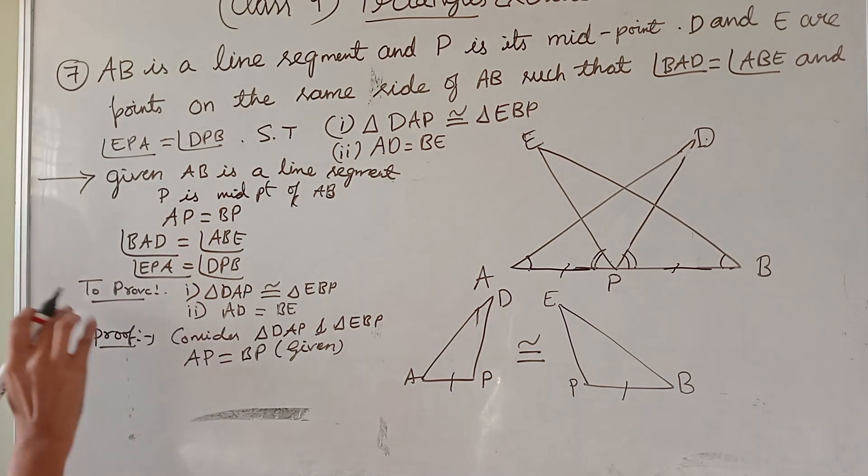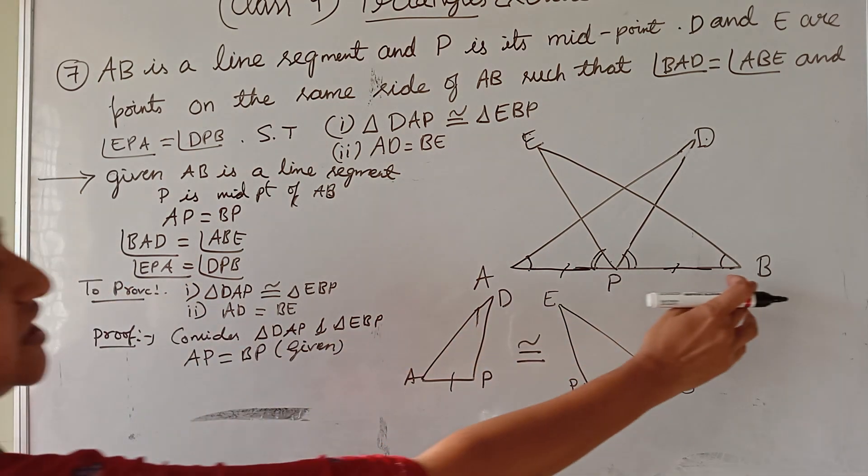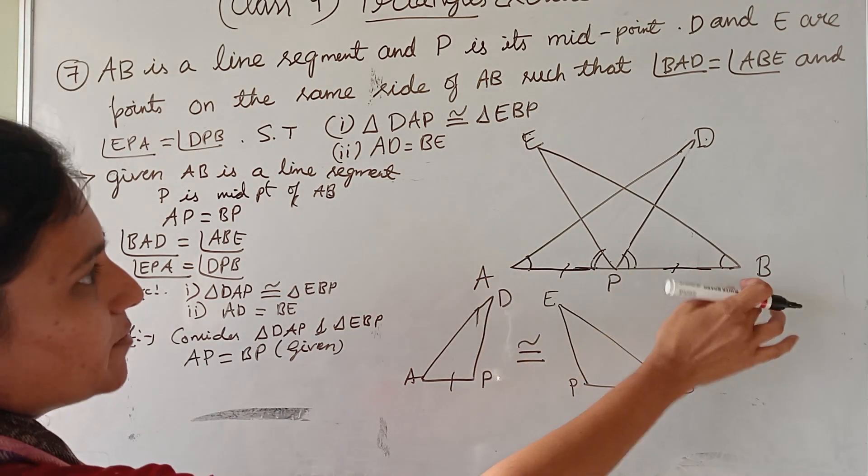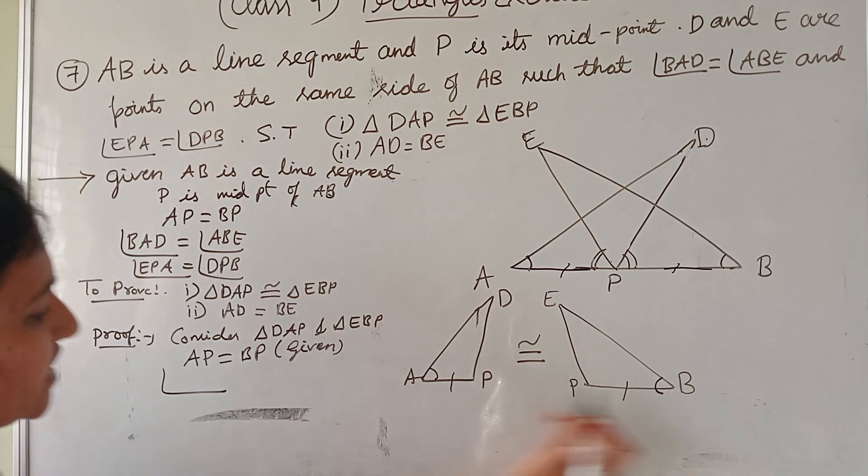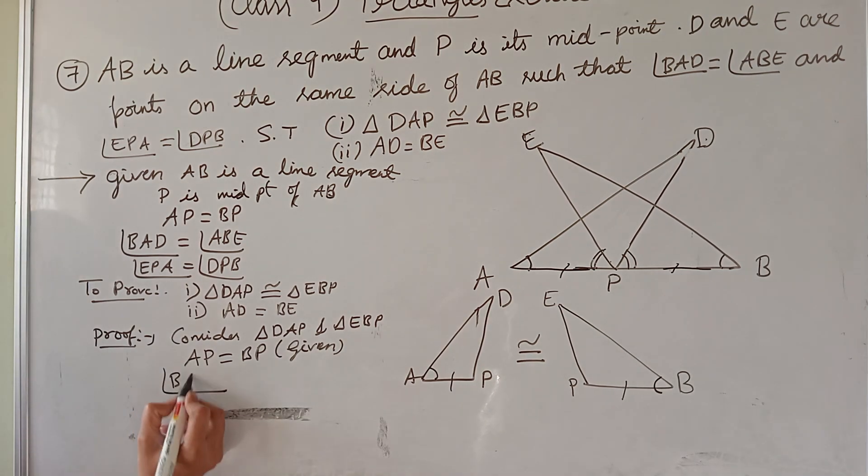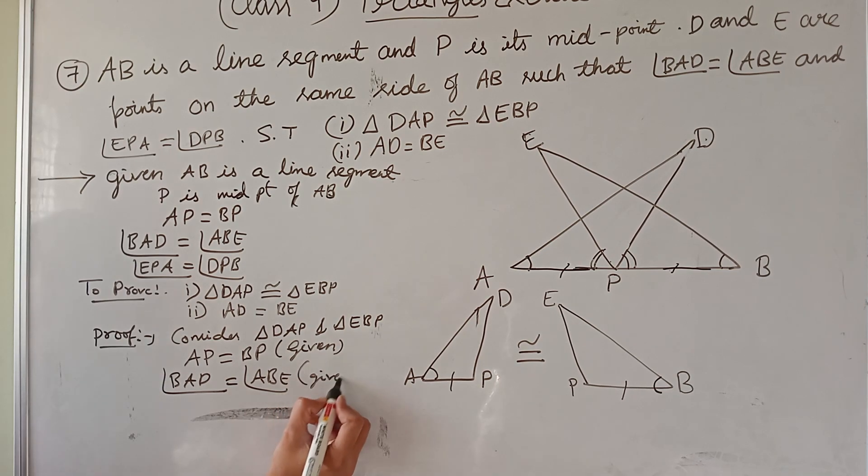Next angle they have given: BAD equal to ABE. This one also I can write angle A equal to angle B. This is also given.